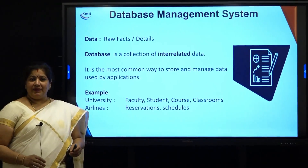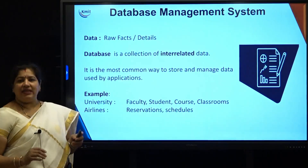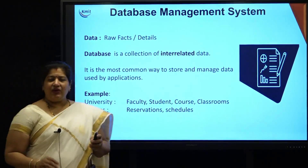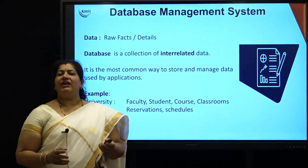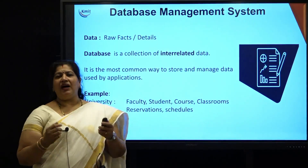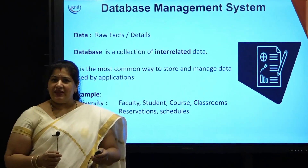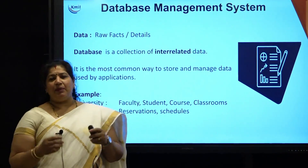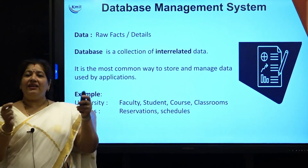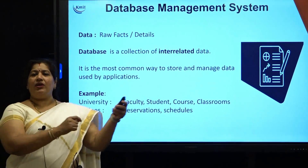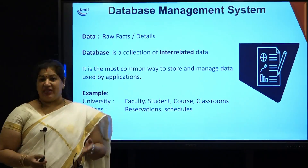Data is a raw fact or the details. For example, I just say 45. 45 can be marks scored by you, it may be the age of a person, or it may be the price of a commodity. But when I add a little more clarity with it, it becomes information.